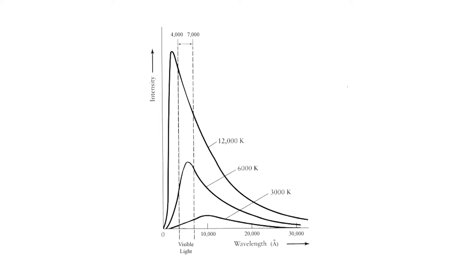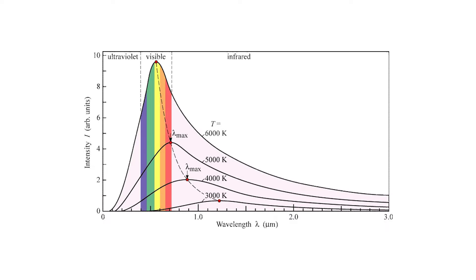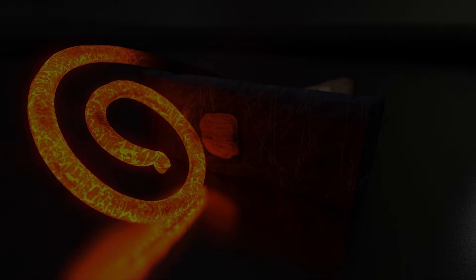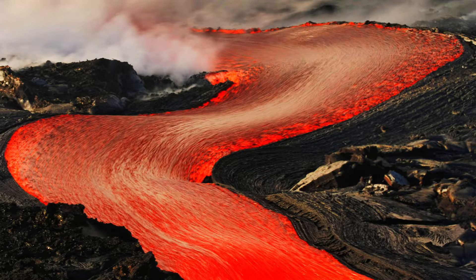These blackbody radiation curves are used as models for celestial objects like our sun. As you can see, a blackbody with a temperature between 5000 and 6000 Kelvin peaks in the visible light portion of the spectrum. Specifically, the sun has an effective temperature of about 5800 Kelvin, where the curve peak is in the yellow area of the visible light spectrum, corresponding to the colour we view the sun as. Thankfully, we don't have to burn our retinas looking at the sun to see these effects.